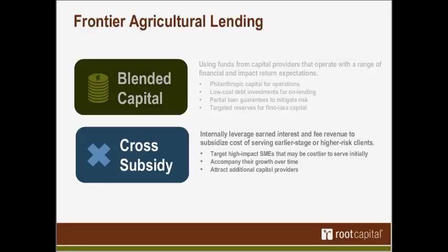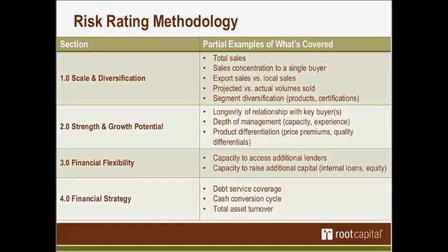Beyond addressing the high cost of agricultural lending through blended capital structures and internal cross-subsidy, there are significant risks to manage, especially given the increasing uncertainties that come with agricultural production. Our credit risk process combines aspects of detailed risk assessment from corporate lending with character-based assessment common in micro-enterprise lending. Through our underwriting process, we assess credit risk using an internal rating system that weighs various indicators across four broad categories: scale and diversification; enterprise strength and growth potential; financial flexibility; and financial strategy.